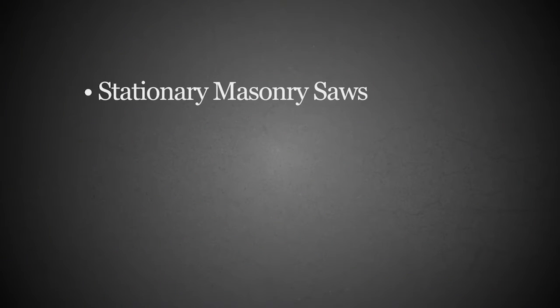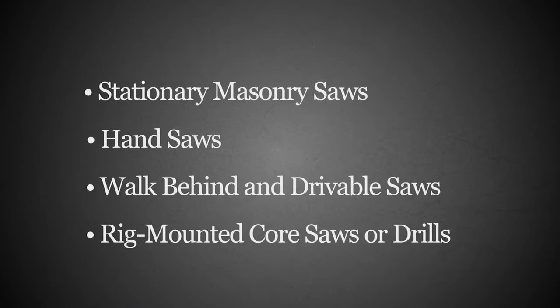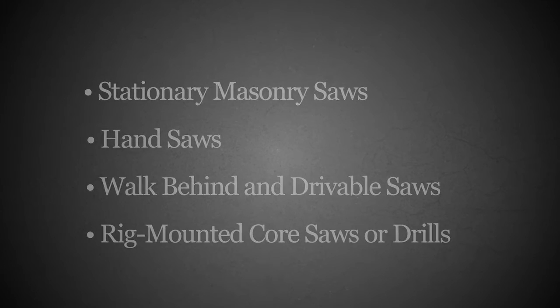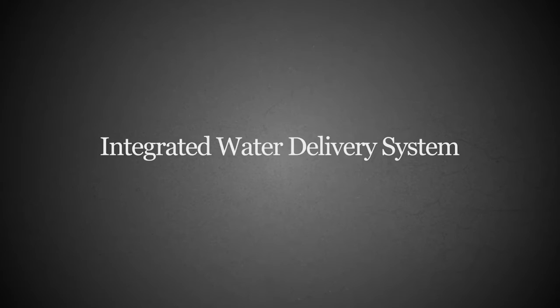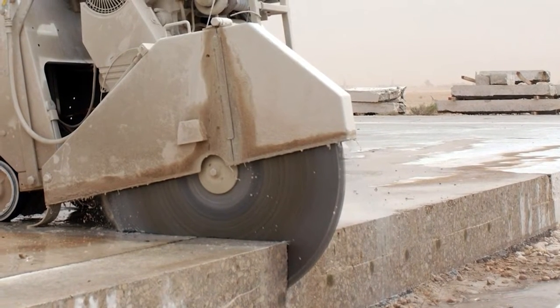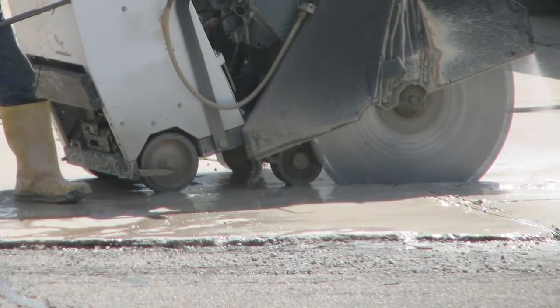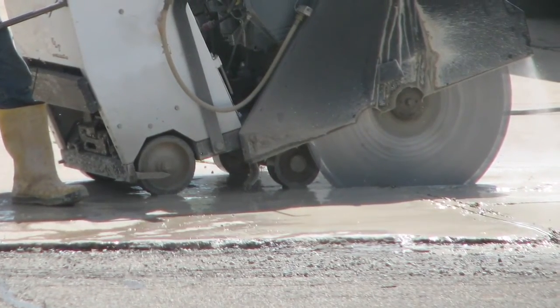For tools like stationary masonry saws, hand saws, walk-behind and drivable saws, rig-mounted core saws, or drills, Table 1 requires the use of a tool equipped with an integrated water delivery system that continuously feeds water to the blade or bit. This is almost always followed up with the instruction to operate and maintain the tool in accordance with the manufacturer's instructions to minimize dust emissions.